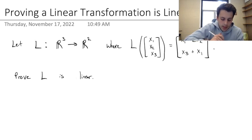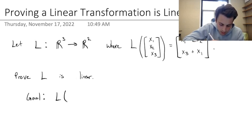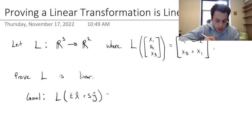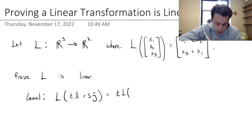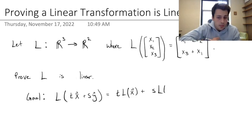To prove that it's linear, the goal is to show that if we take L of a scalar t times a vector x plus another scalar s times a vector y, this would be equal to the scalar t times the linear transformation of x plus the scalar s times the linear transformation of y.